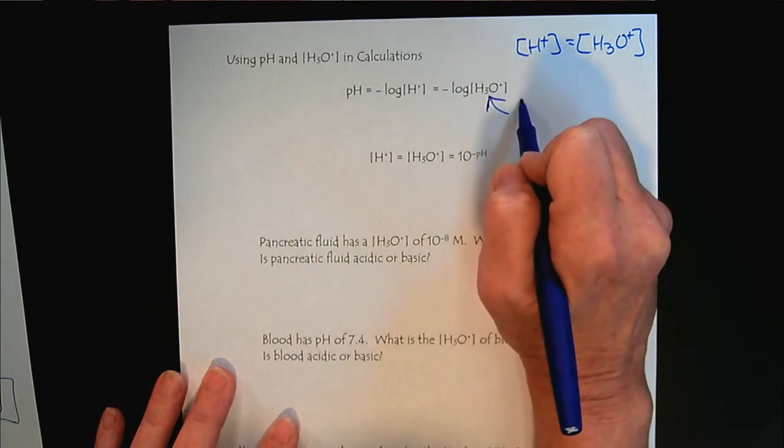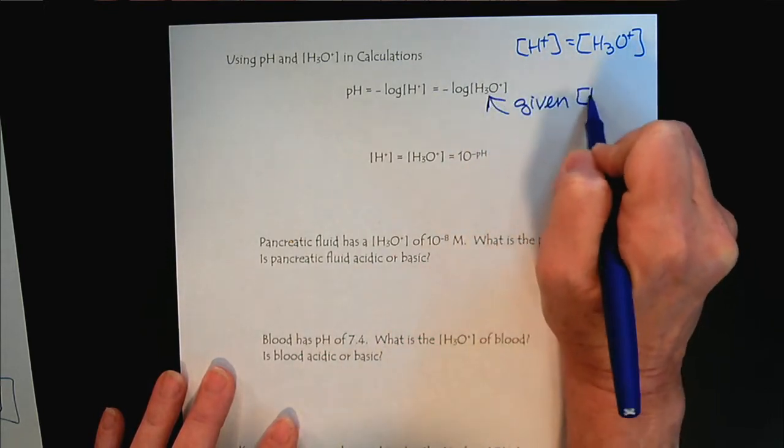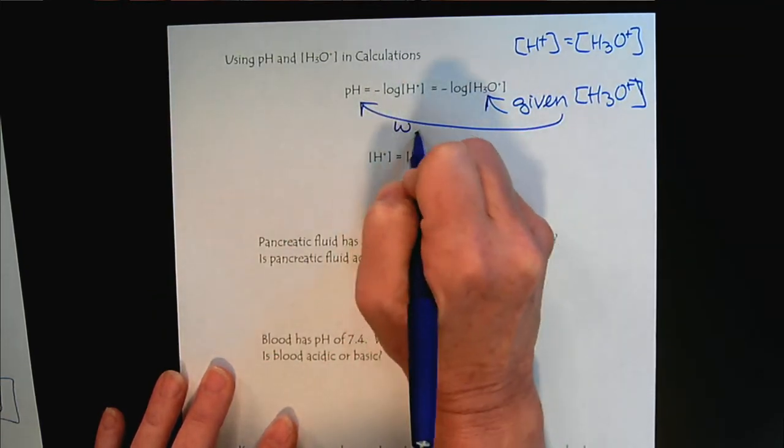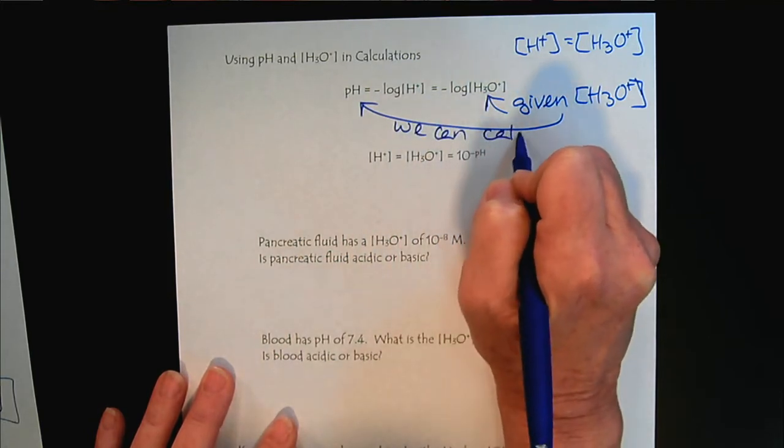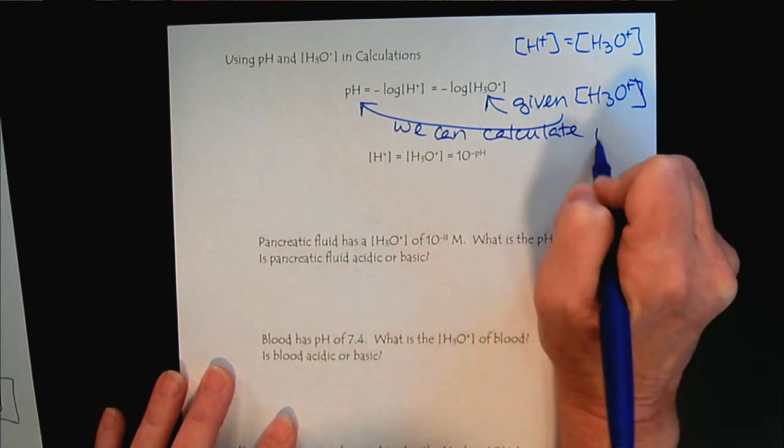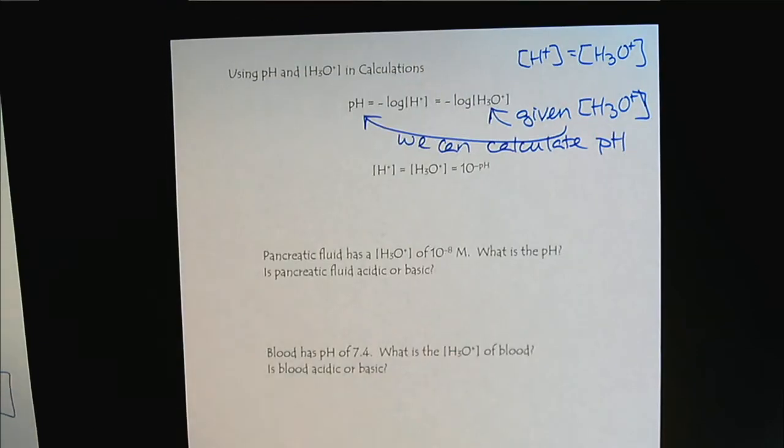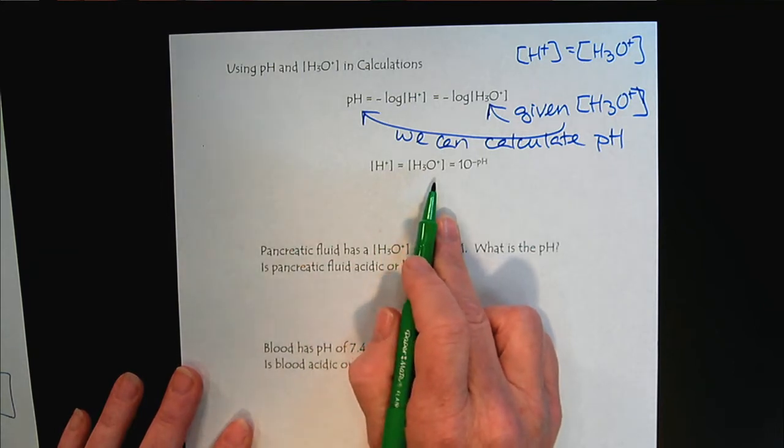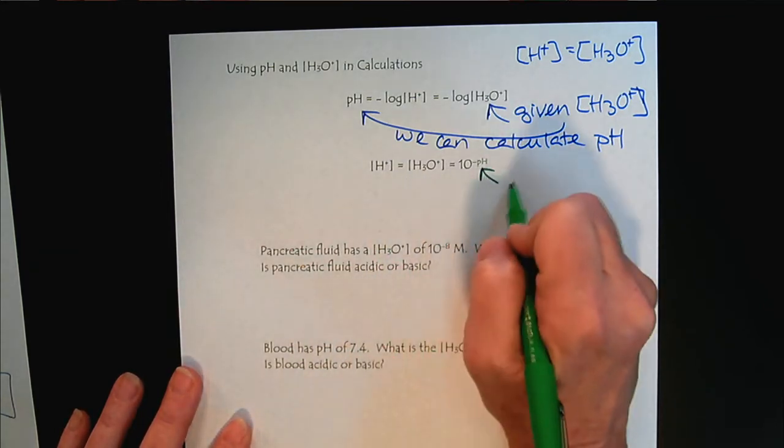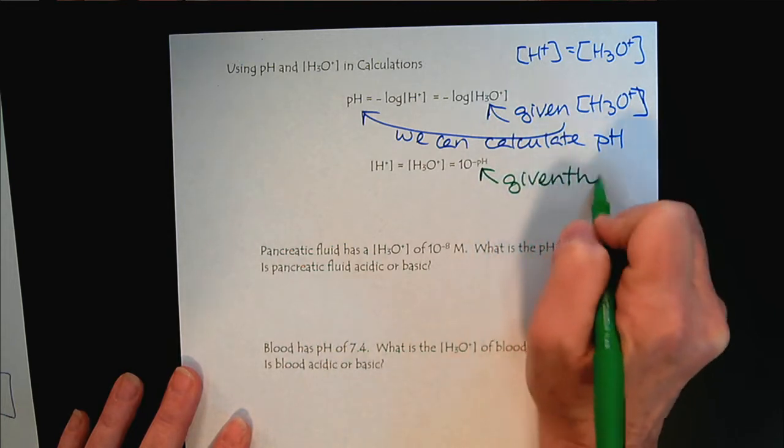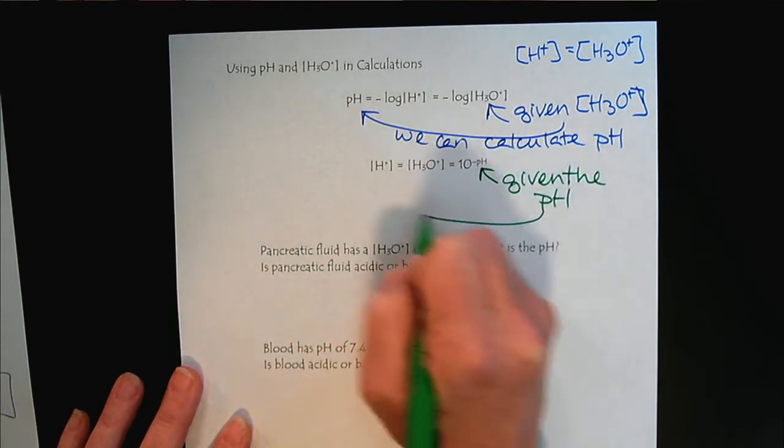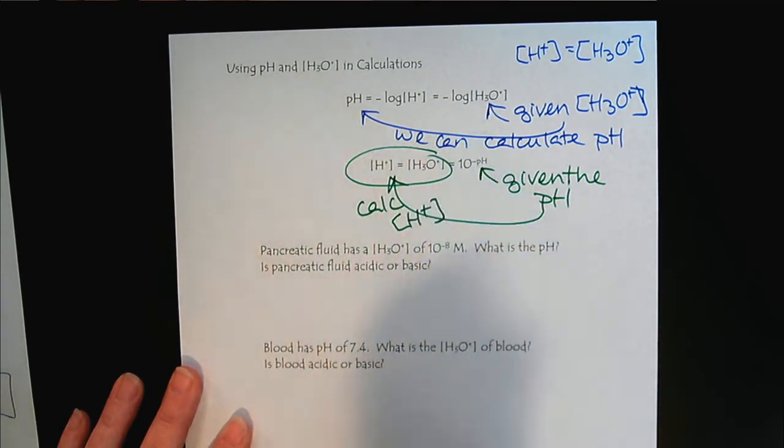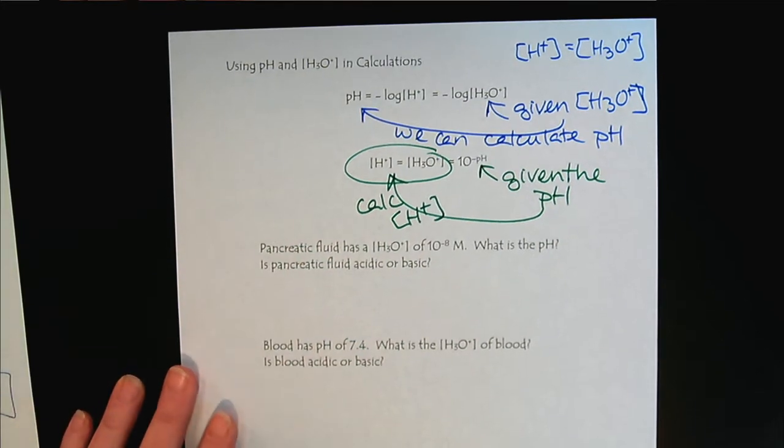So the point here is we use this formula. If we're given H3O+, we can calculate pH. And then vice versa, as we showed on the previous page, we could rearrange this. And then the power here is, given the pH, we can calculate these concentrations.